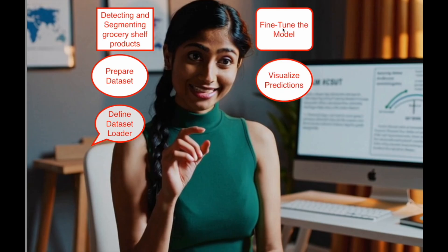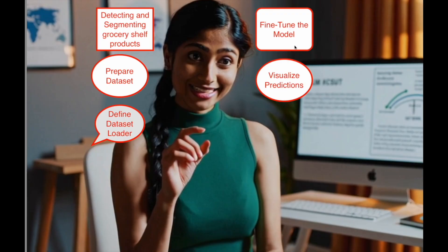Step 4: Fine-tune the model. The Mask-RCNN model, pre-trained on general object detection tasks, is adapted to the SKU-110k dataset by modifying its prediction heads. The classification head is updated to detect one object class — products — in addition to the background, and the mask head is adjusted for the new dataset. The model is moved to a suitable device (GPU or CPU). An SGD optimizer and learning rate scheduler are defined to optimize model parameters. Mixed precision training is used to improve efficiency and reduce memory usage, with GradScaler handling dynamic scaling of gradients. The model is trained over multiple epochs with batch processing.